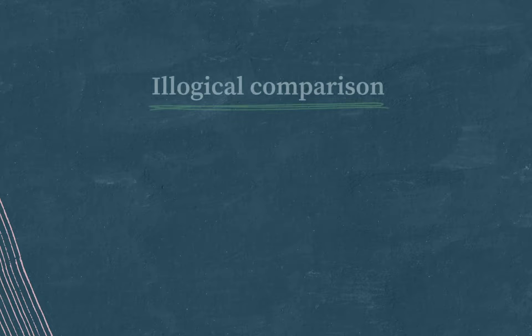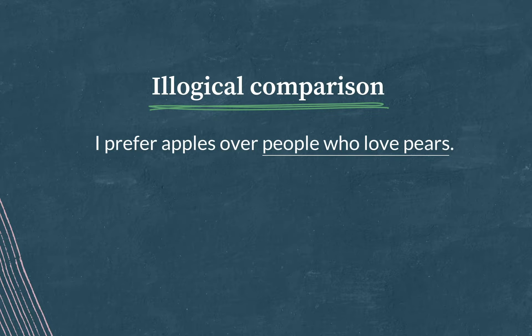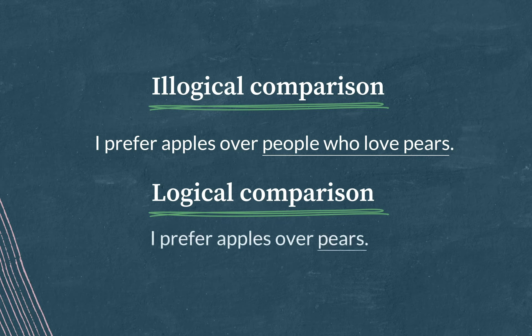An example of illogical comparison would be: 'I prefer apples over people who love pears.' Why is this incorrect? Because this sentence compares apples to people, not apples to pears. A person is not picked in an orchard — it's not the same thing. To fix this sentence, I need to compare apples to pears and change it to: 'I prefer apples over pears.'